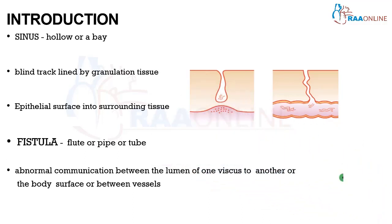So what is a fistula then? A fistula denotes a flute or a pipe or a tube. It is an abnormal communication that extends between the lumen of one viscus to another viscus, or from one viscus to a body surface area, or between vessels. In short, it is an abnormal communication between two epithelial surfaces.